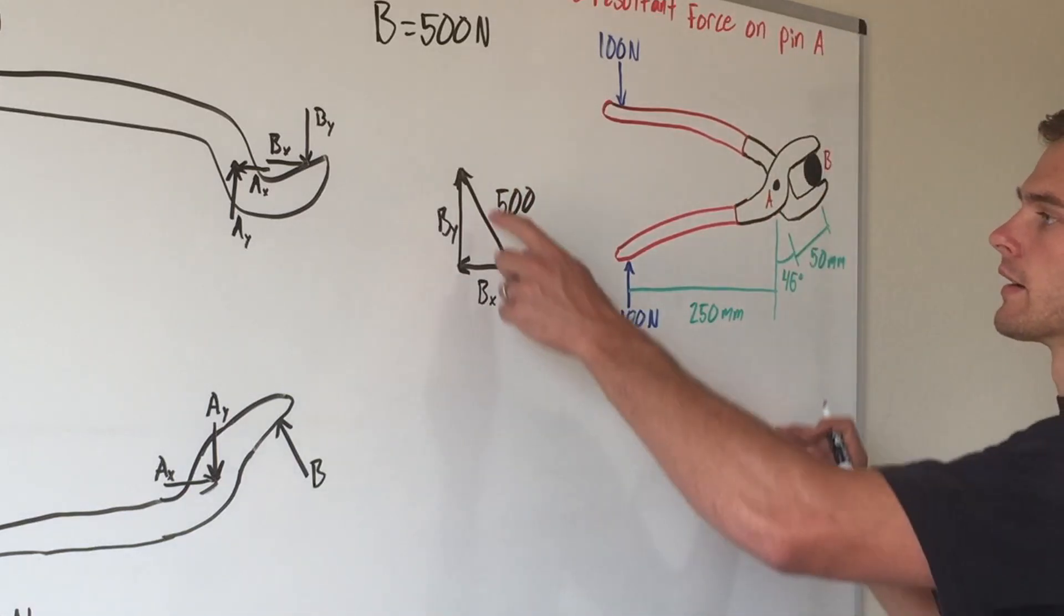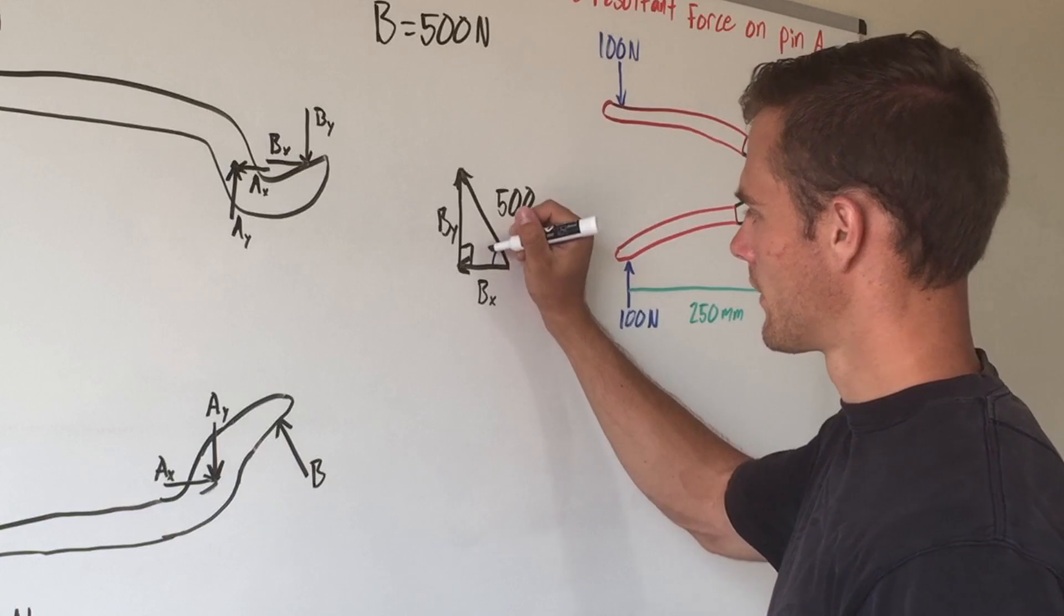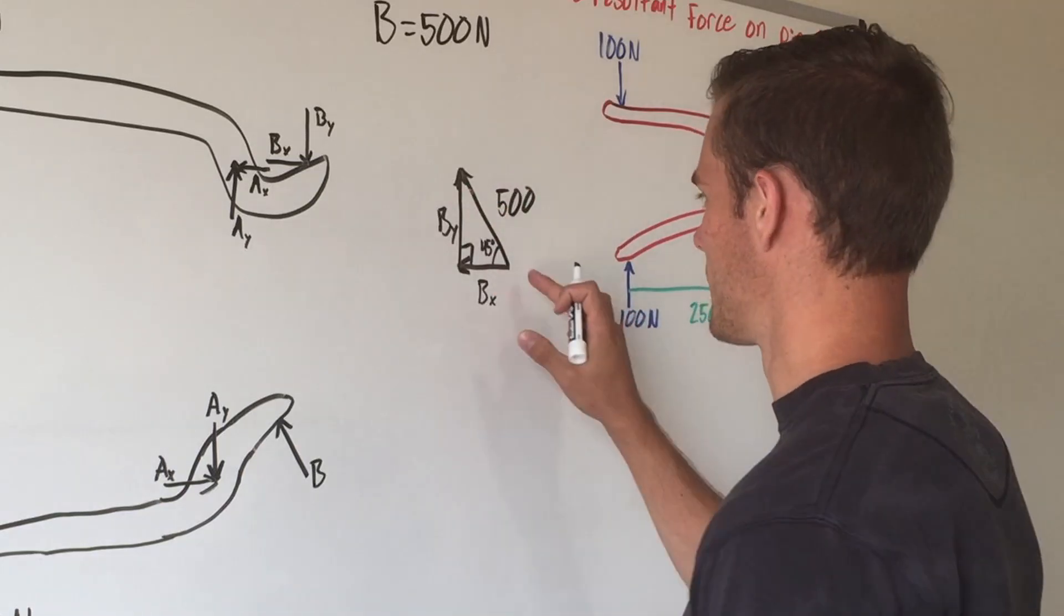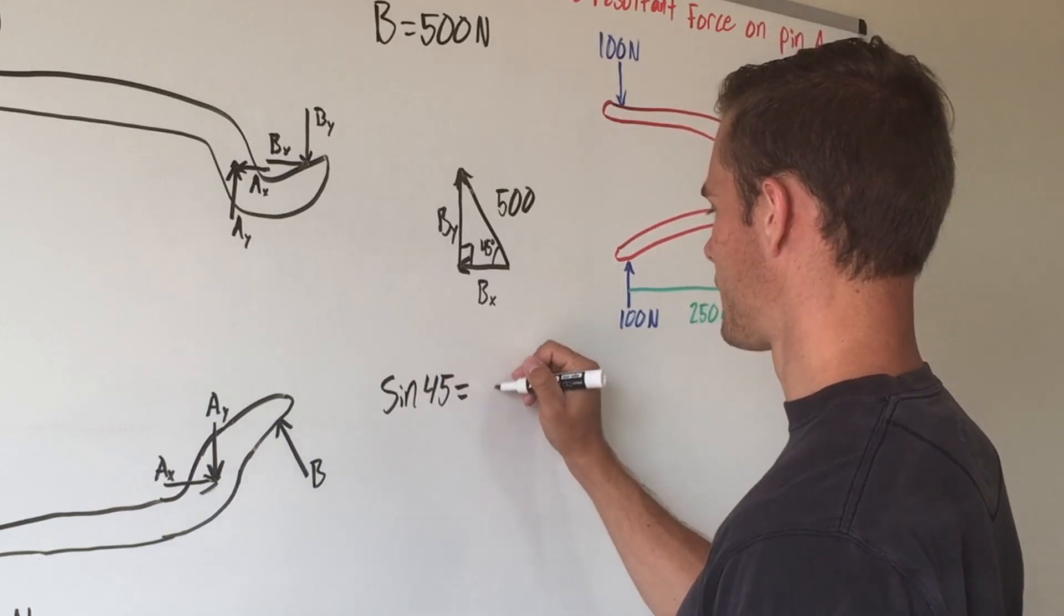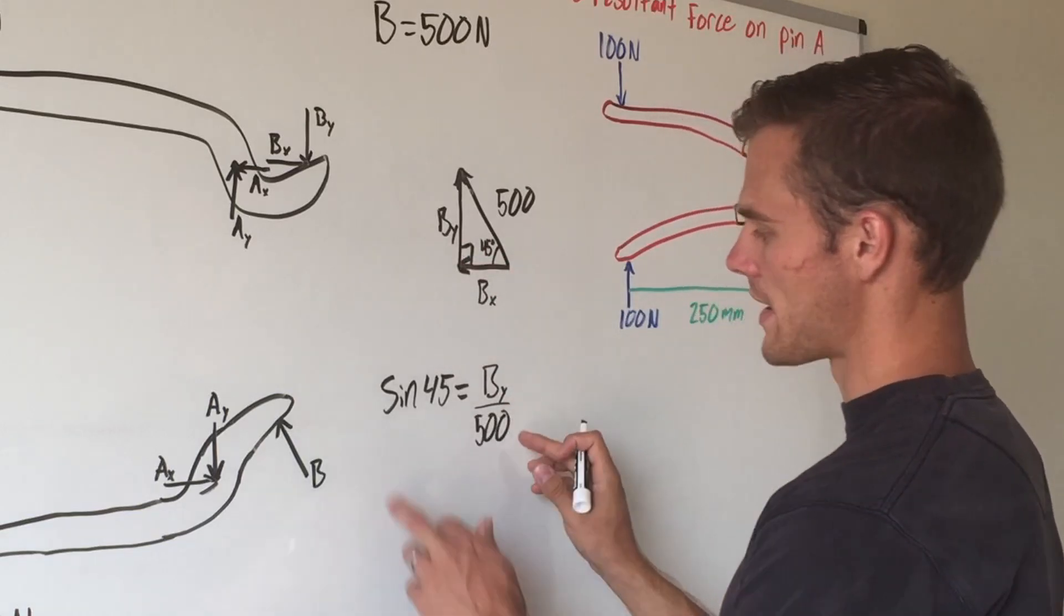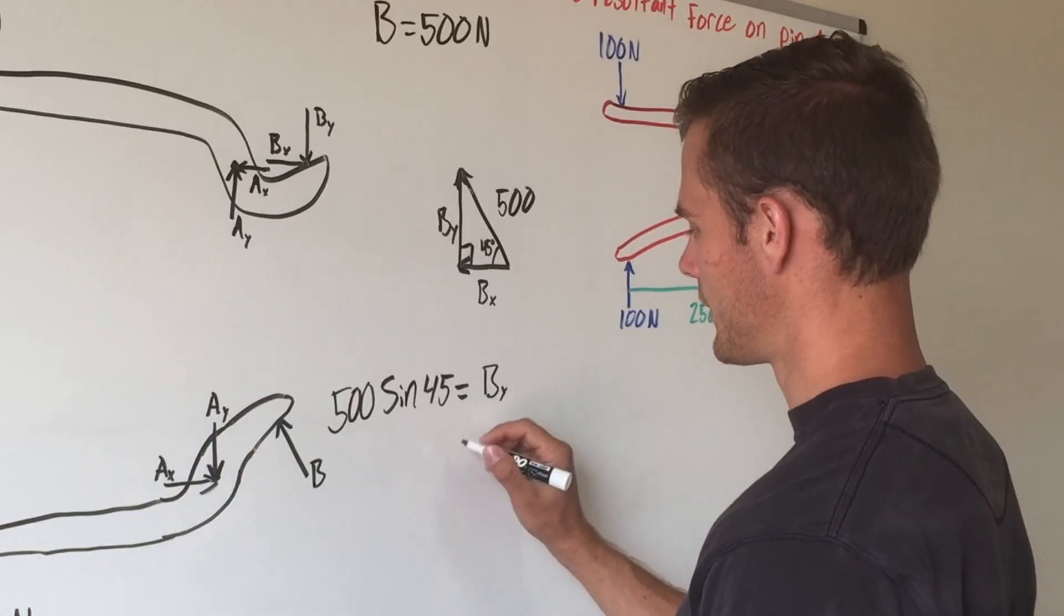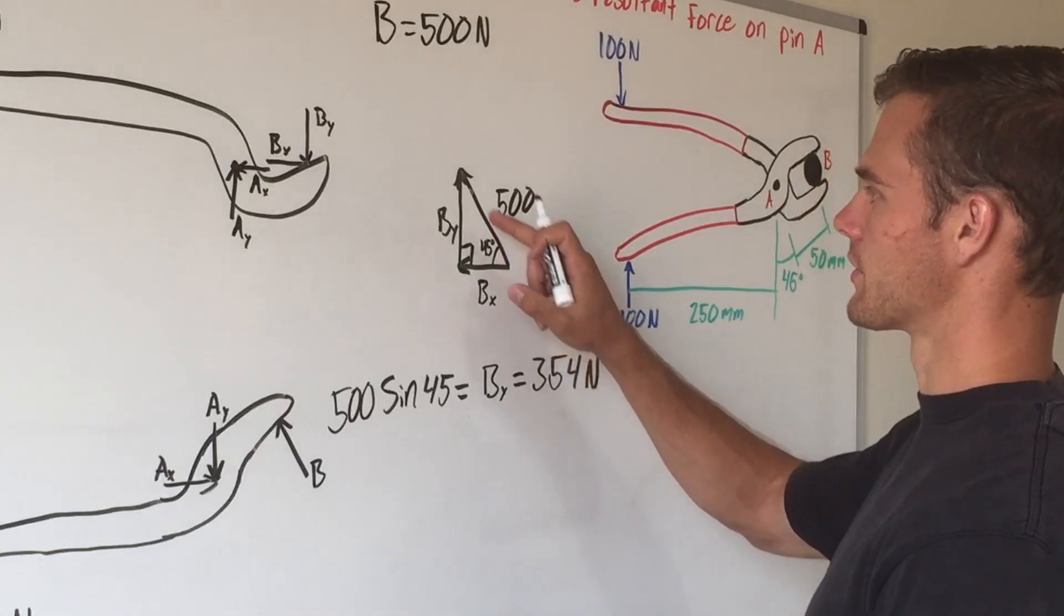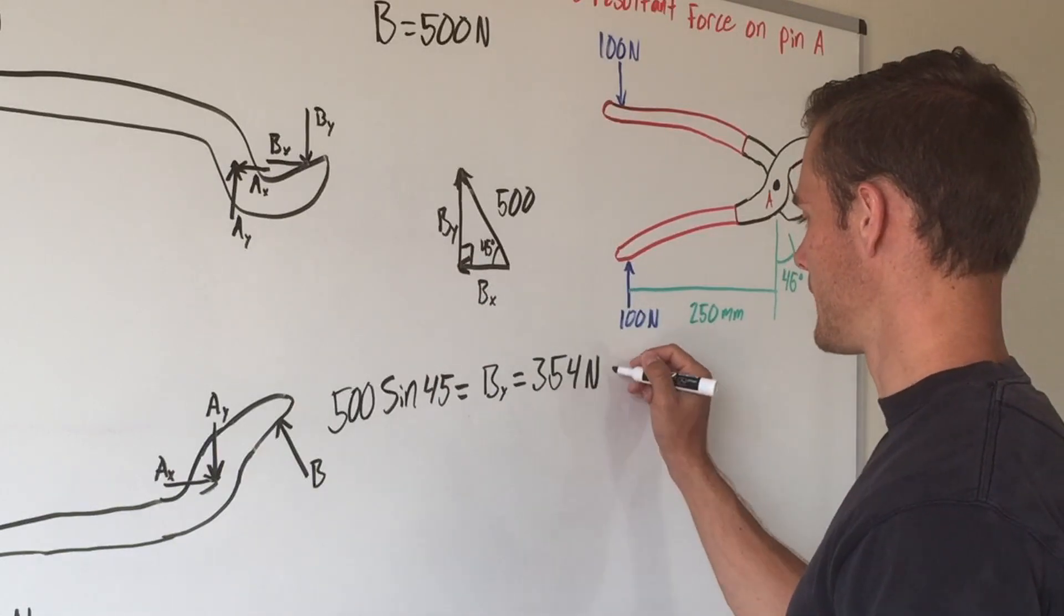It's already given to us that this angle here is 45 degrees. And because this is a 90 degree angle to add up to 180, this side is also going to be 45 degrees. And so it doesn't really matter whether we use this side or this angle or this angle to solve for it, but we're just going to label it that way. And so if we said that the sine of 45 degrees equals B sub y, because it is the opposite over our hypotenuse which is 500, you multiply both sides by 500 and you get that this equals B sub y. Plug this into your calculator and you get that B sub y equals 354 newtons. And since these two angles are the same, that means these two sides are also going to be the same, meaning that B sub y and B sub x are equal, so this is also equal to B sub x.